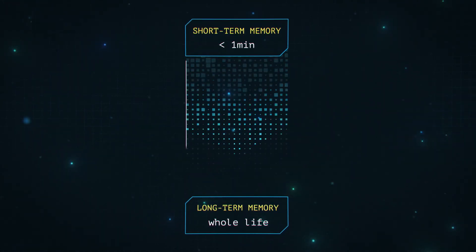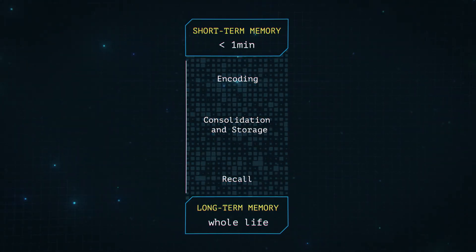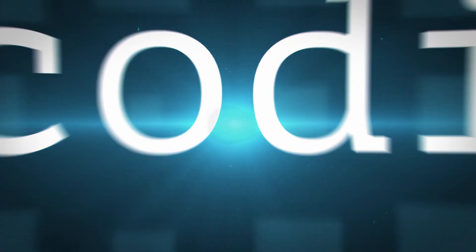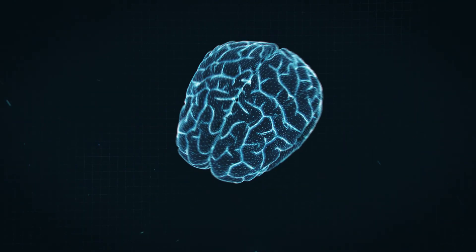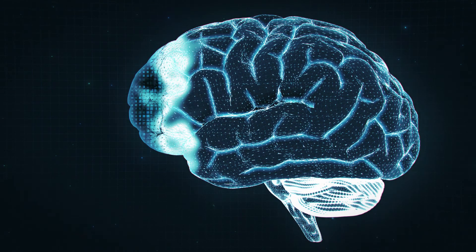But how does information go all the way to long-term memory? The first step is encoding, where the perceived stimulus is converted into something that can be stored.